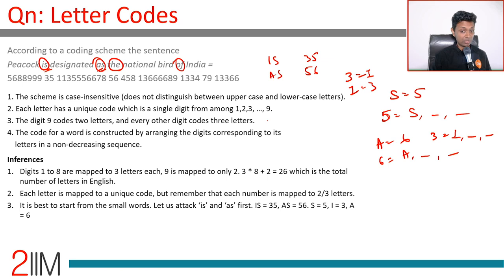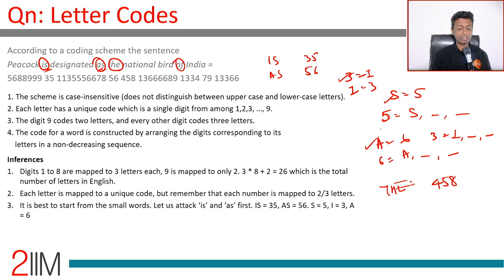We've attacked 'is' and 'as,' giving us I, S, and A. Next, 'the' is also a good starting point. 'The' is four, five, eight in some order. If we find a word containing T and H, or H and E, or just T, H, or E individually, we can make further deductions.